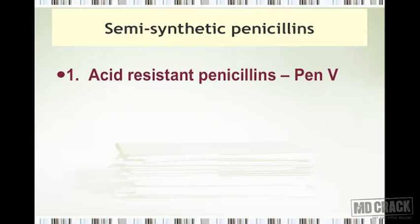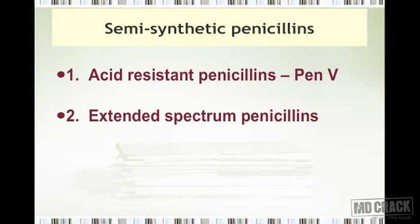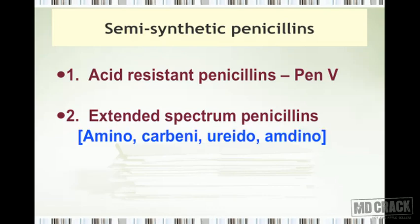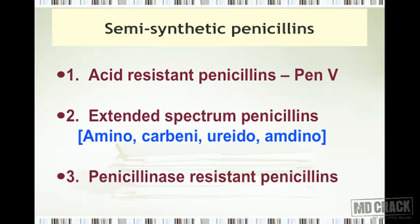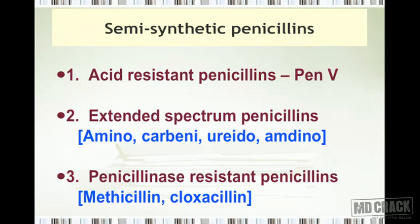We classify semi-synthetic penicillins based on these three goals. Number one is acid-resistant penicillin — that's penicillin V — which can be given orally because it is resistant to gastric hydrochloric acid. The second group is extended spectrum penicillins, with four types: aminopenicillins, carboxypenicillins, ureidopenicillins, and amdinopenicillins. The third group is penicillinase-resistant or beta-lactamase-resistant penicillin, examples being methicillin and cloxacillin.